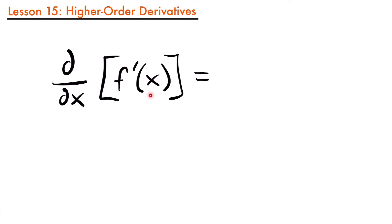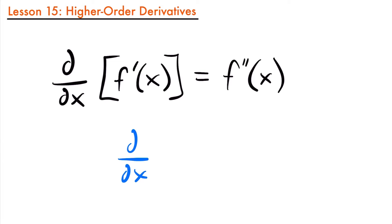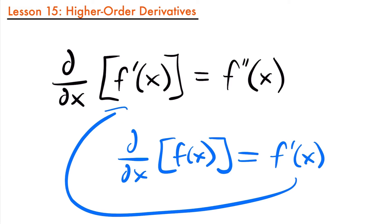Here we are taking the derivative of f prime of x, which we know to be the derivative of a function f of x. The derivative of that derivative is going to be f double prime of x, and this is just one of many notations to show a second derivative. So we originally had our function f of x, took a derivative to get f prime of x. Now if we take the derivative of f prime of x, we get f double prime. And if we take the derivative of f double prime, we get the third derivative, f triple prime, and so on.